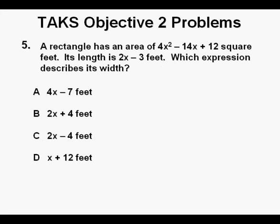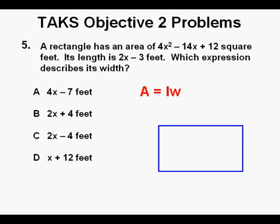Problem 5. A rectangle has an area of 4x squared minus 14x plus 12 square feet. Its length is 2x minus 3 feet. Which expression describes its width? Again, this is about understanding what we have. The formula for the area of a rectangle is area equals length times width written as A equals LW. I like to draw a picture, in this case a rectangle, in order to conceptually understand the problem as well as possible.